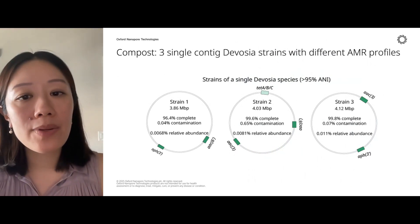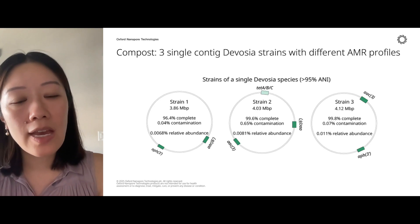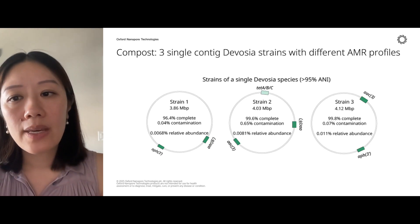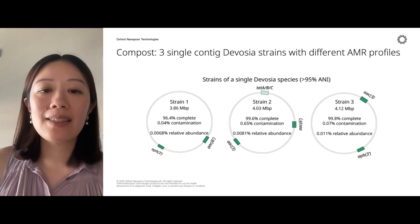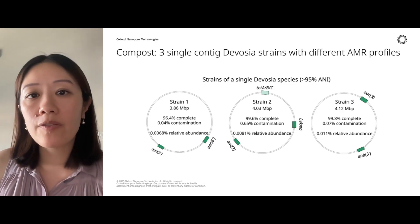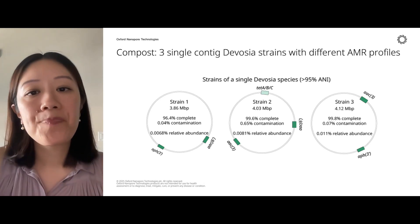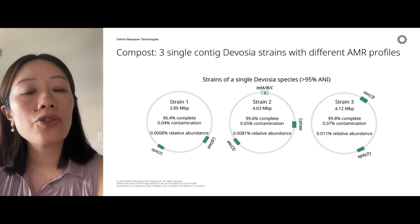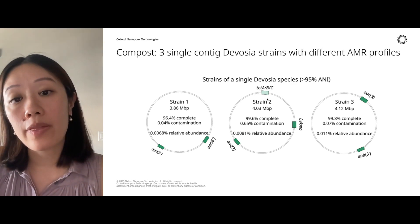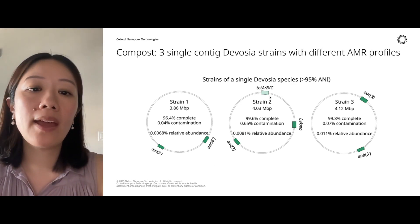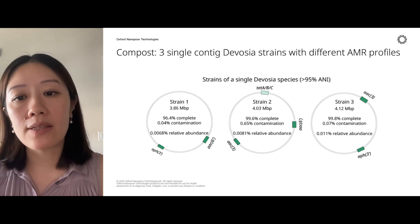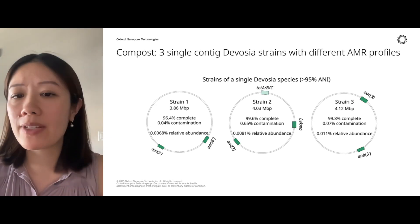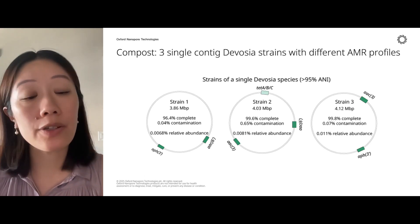Moving beyond MAGs, we were able to resolve different strains. For a single Davosia species from the compost assembly, we got three single contigs each representing a complete genome of the same species. Importantly, each had different antimicrobial resistance profiles — only one strain had tetracycline resistance with a tetracycline efflux pump, and the remaining genes showed different resistance profiles between the three strains. This is a small example of how strain resolution can emerge directly from your assembly in metagenomics.